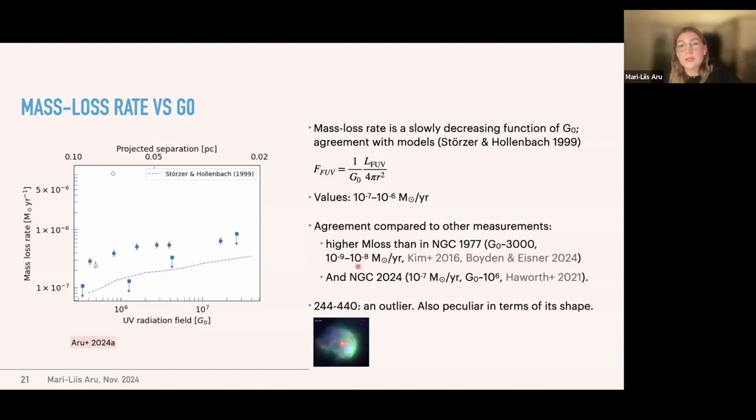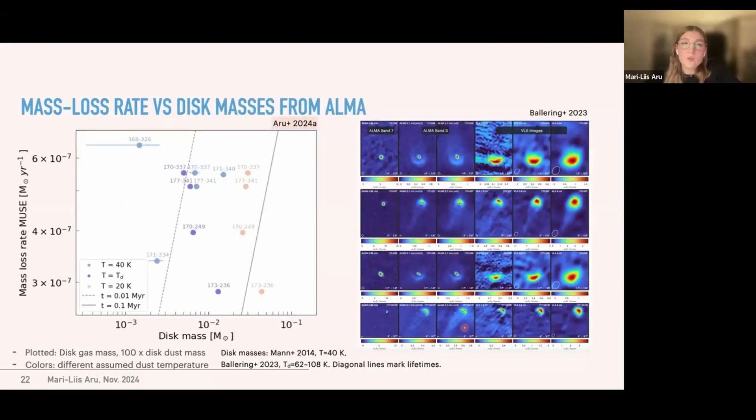And these values are in agreement compared to other measurements in the other regions. So for example, this is a higher mass loss rate than in NGC 1977, where the UV field is weaker. It's more of an intermediate field. And it's also higher than in NGC 2024. And again, you can see the outlier here, the diamond, which is the proplyd 244-440. And as I mentioned, it's also peculiar in terms of its shape.